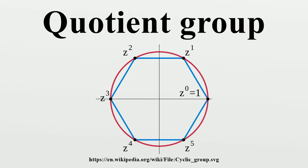Let N be a normal subgroup of a group G. We define the set G/N to be the set of all left cosets of N in G, i.e., G/N = {aN : a ∈ G}. We define an operation on G/N as follows: for each aN and bN in G/N, the product of aN and bN is (ab)N. This defines an operation on G/N, because we have the following equalities of subsets, using in an important way that N is a normal subgroup.